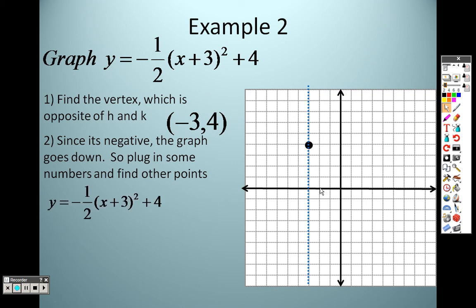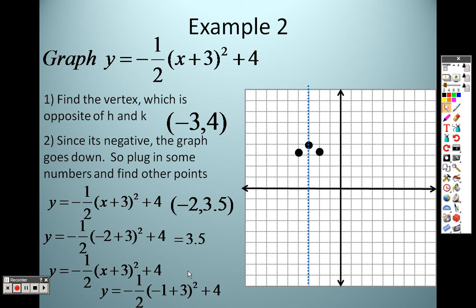So I'm gonna try plugging in a negative 2, because that's gonna be close. So I plug in a negative 2. Negative 2 plus 3, that's 1. 1 squared is 1. 1 times negative 1 half is negative 1 half plus 4, that's 3.5. So that means I plug in negative 2. I go over negative 2, and I have 1, 2, 3, and a half, which is right there, which means it's the same exact distance away on the other side. And then let's try plugging in a negative 1. So when I plug in a negative 1, I end up getting 2 as my answer. So that one is negative 1. So I go over negative 1 and up 2. So that's a distance of 2. So there's a distance of 2 on that side. And there is my parabola.